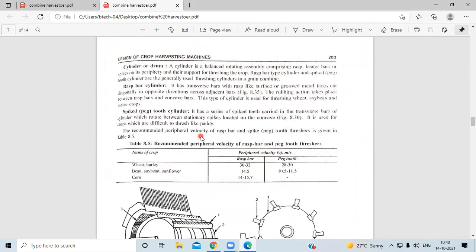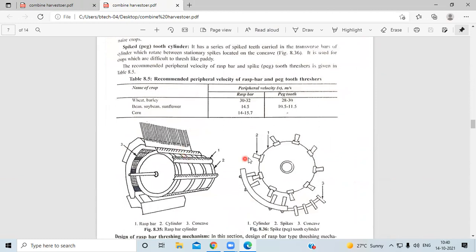Next is the threshing mechanism. Threshing mechanism uses a rasp bar and spike-tooth cylinder. If wheat and barley crop is used, the rasp bar velocity is 30 to 32 meters per second, peg tooth 20 to 30 meters per second. For different crops it is given here in the tables.